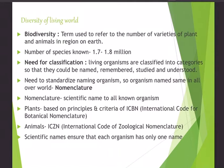In the living world there is a lot of diversity. About 1.7 to 1.8 million species are surviving on Earth, each with its own characteristics and structure — this is biodiversity. The term 'biodiversity' refers to the number of varieties of plants and animals on Earth. With so many organisms, there is a need for classification so that they can be named, remembered, and studied.